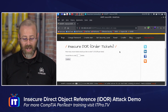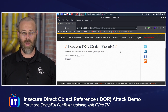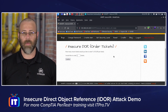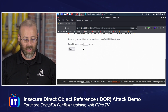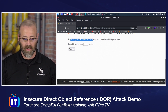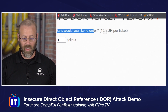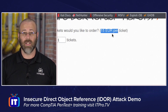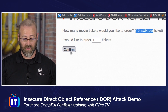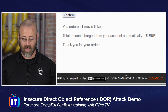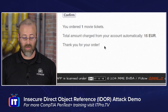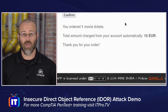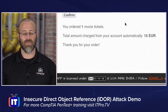So let's jump into my computer. I've got an application up here called BWAP, or the Broken Web Application — purposely broken — and it does a great job of doing demonstrations for us. Today we are going to order some tickets. This web application asks how many movie tickets you'd like to order, and it tells me right here that they are 15 euros per ticket. So if I want to order one ticket, I hit confirm, and when I scroll down I can see we ordered one movie ticket. The amount charged from my account automatically was 15 euros — that's a lot of money for a movie ticket.